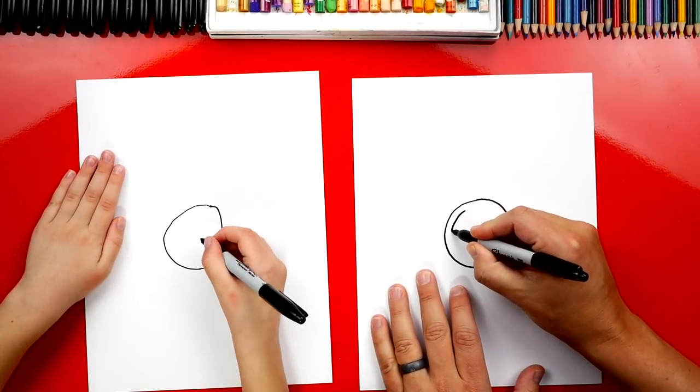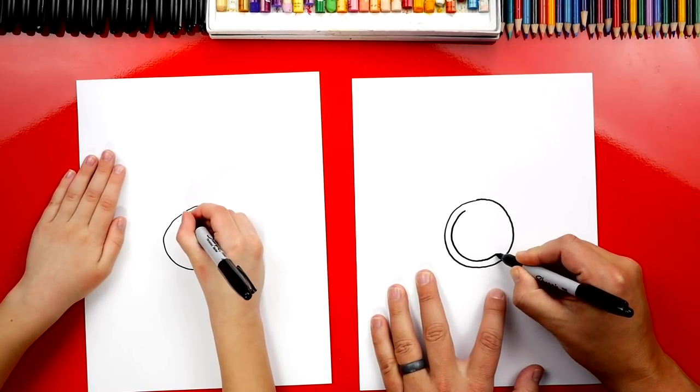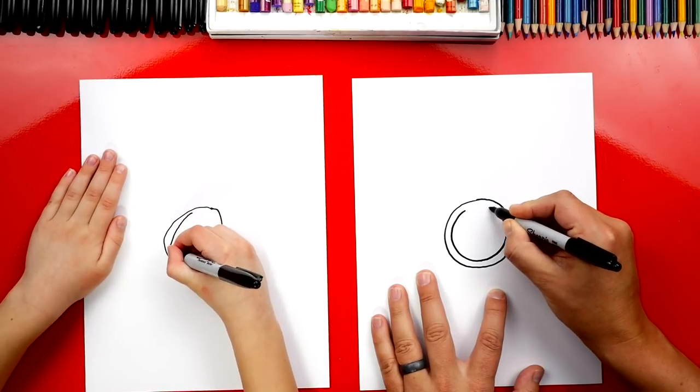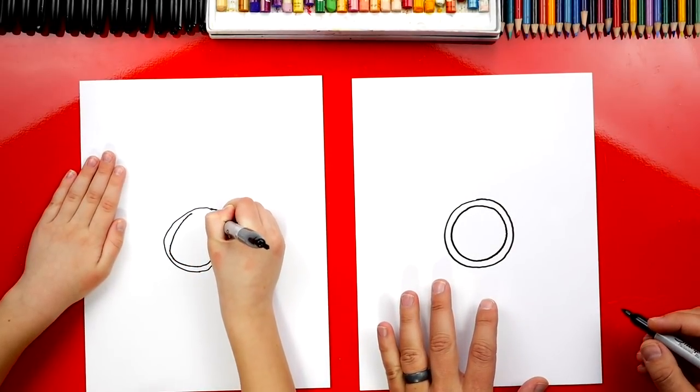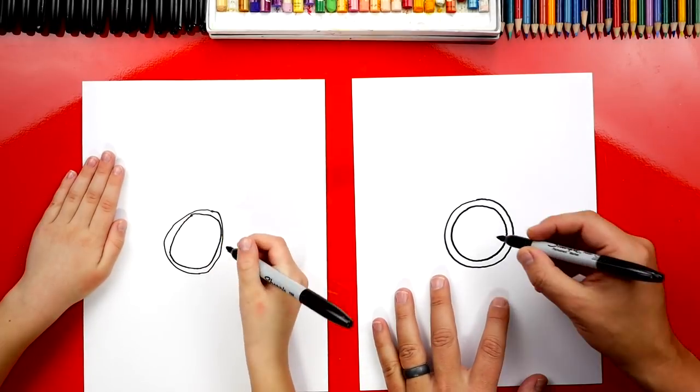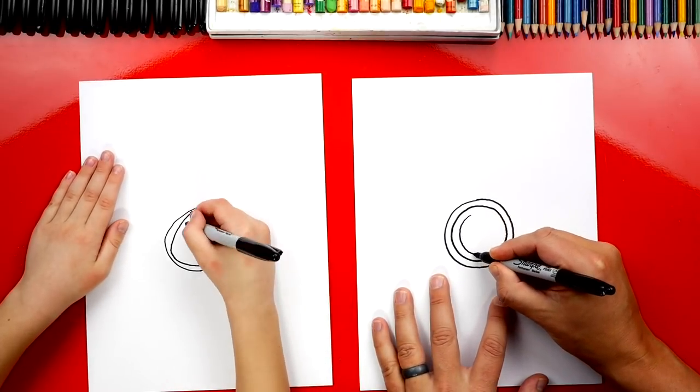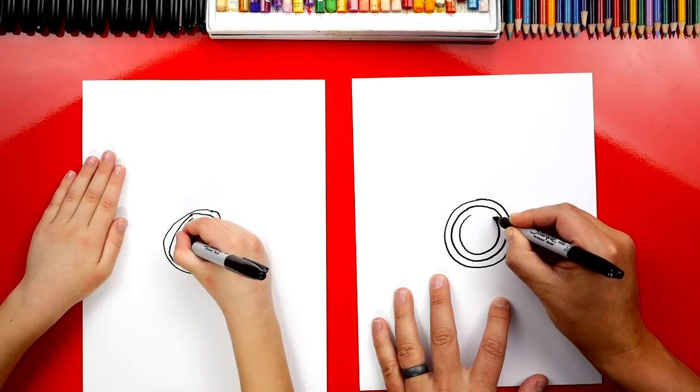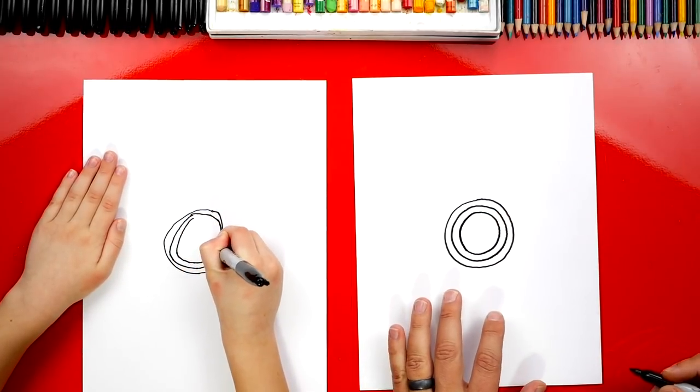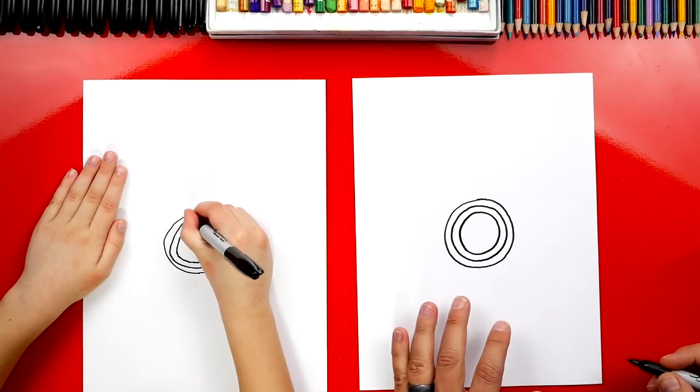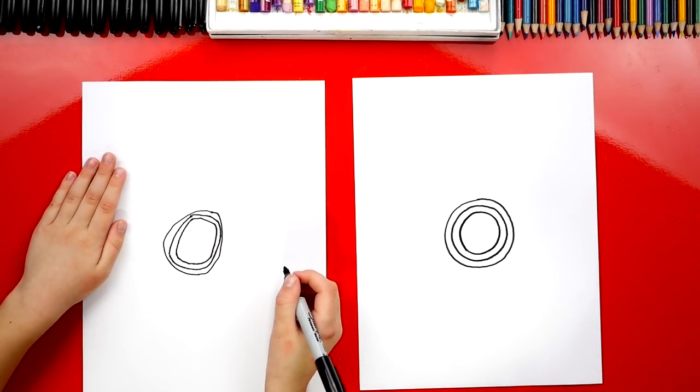Now let's draw another circle inside of that first one. We're going to draw it right next to it. All right, now let's draw one more circle inside. This is for the actual glass part of our lens. All right, it's fun practicing circles.